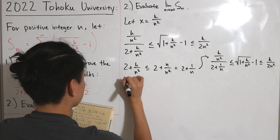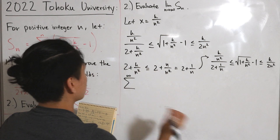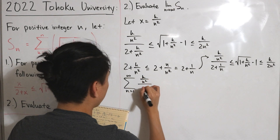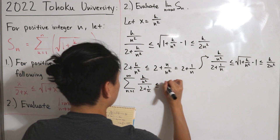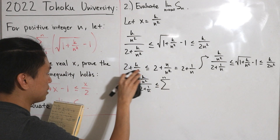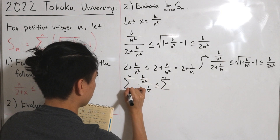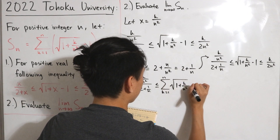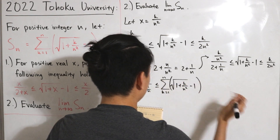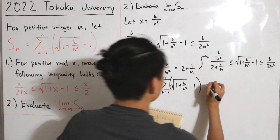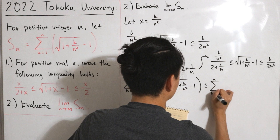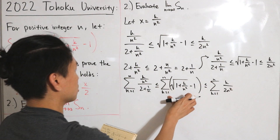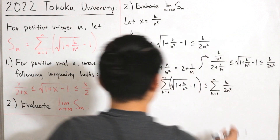Now we take the partial sum from k=1 to n across all sides. The center sum is exactly S(n). So we have: the sum of k/n² divided by (2 + 1/n) ≤ S(n) ≤ the sum of k/(2n²). Both outer sums can be evaluated using the closed-form formula for the sum of the first n natural numbers.